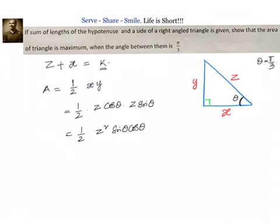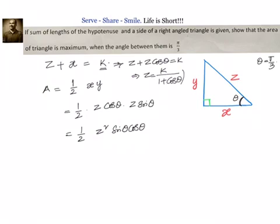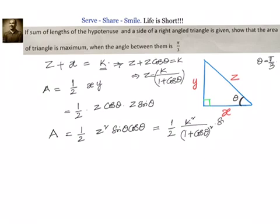Now, what is z? We go back and write z + x = z + z·cosθ = k, which gives z = k/(1 + cosθ). Once we know z, we can write area = ½ · [k/(1 + cosθ)]² · sin2θ, which simplifies to k²·sin2θ / [4·(1 + cosθ)²].